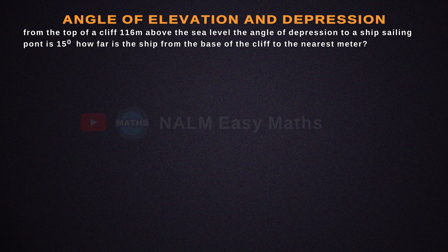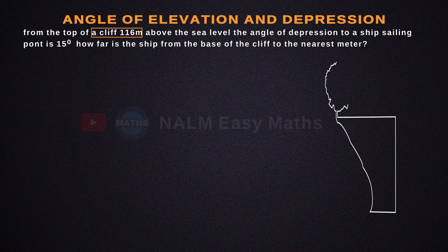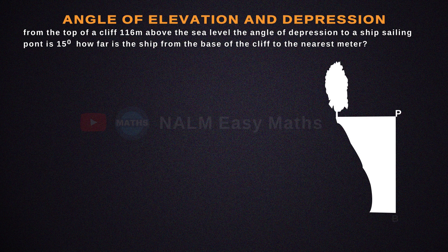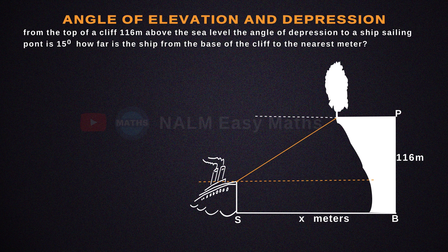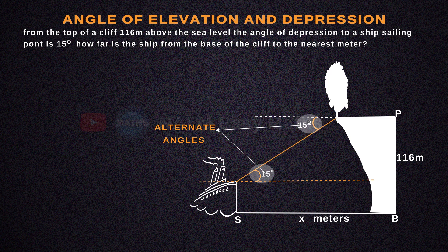To solve this worded problem, let's first draw a cliff. The top of the cliff is P and the base of the cliff is B, with 116 meters between them. Let SB equal X meters be the distance of the ship from the cliff. The angle of depression from the top of the cliff is 15 degrees, so the angle of elevation from the ship point would also be equal to 15 degrees, because both angles are alternate angles, making them equal.